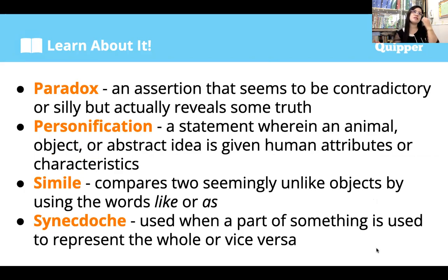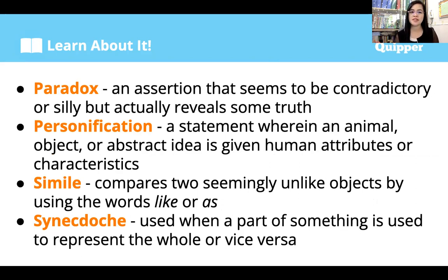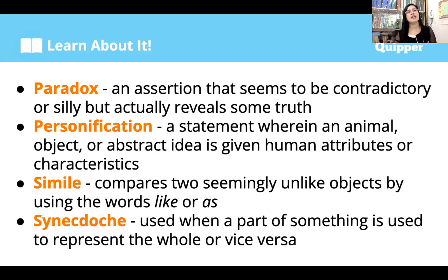Paradox is sometimes confused with oxymoron. Paradox is an assertion that seems contradictory but actually reveals some truth. For example, 'if you're ready to live, then you're ready to die' — it doesn't seem to make sense at first, but examining it within the context of life, it does make sense. Personification is when an animal, object, or abstract idea is given human attributes. For example, 'the sun is smiling at me' or 'flowers are dancing in the sunlight' — we give human attributes to inanimate objects.